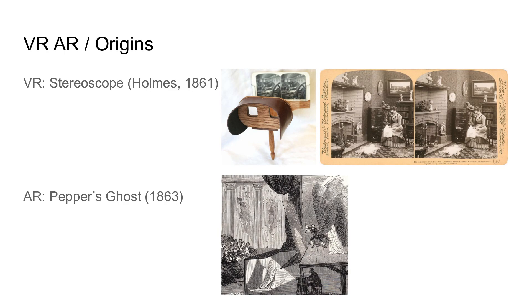Let's jump into a time machine and travel back to the year 1861 where we see the ancestor of today's VR devices, the stereoscope. It presents different images to the left and right eye, which makes us perceive depth and creates the illusion of looking into a three-dimensional scene. If we replace these static photographs with real-time computer-generated images and take into account the head pose of the user, we have a modern VR system.